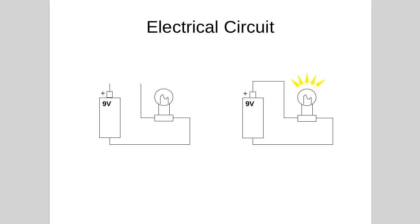In the circuit on the right, the circuit is complete. Electricity can flow from the battery, through the light bulb, and back to the battery.